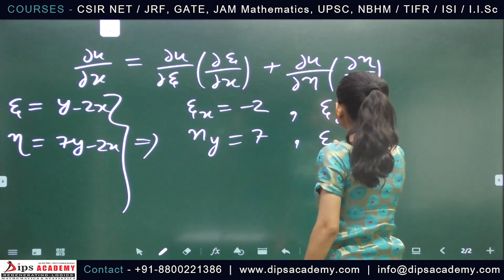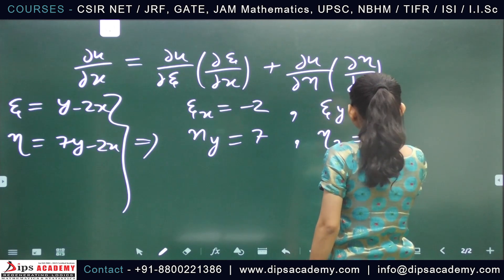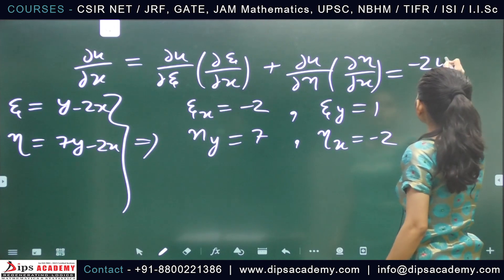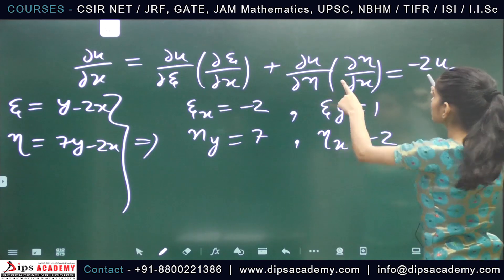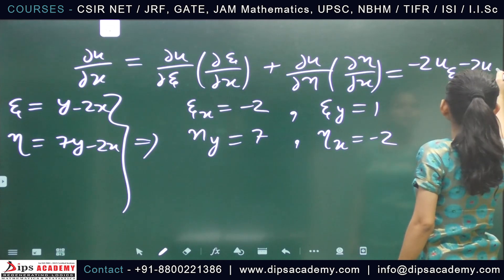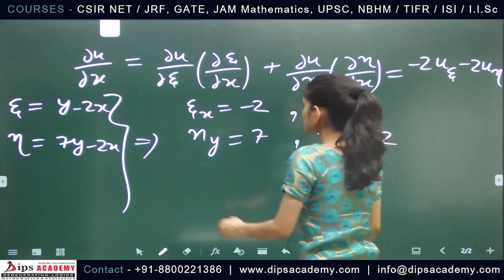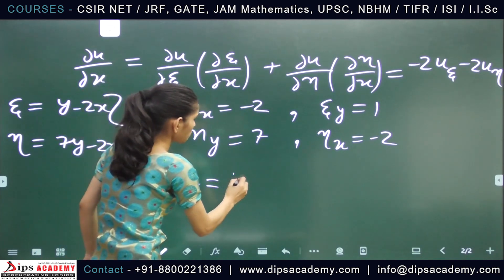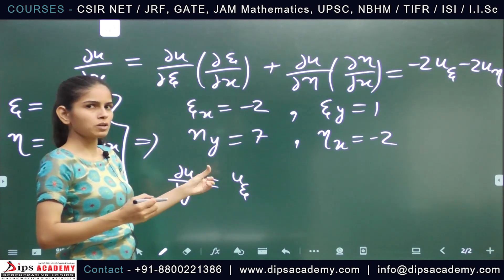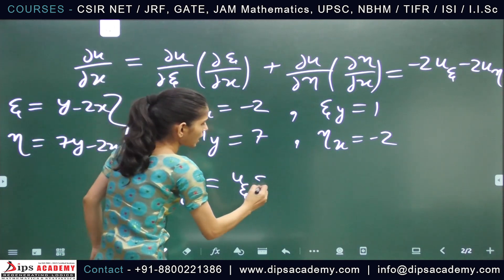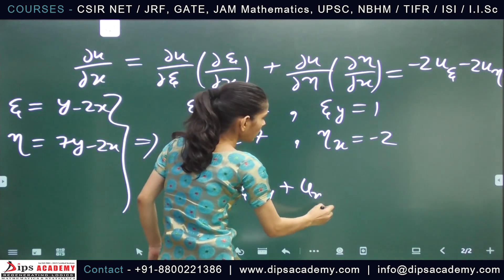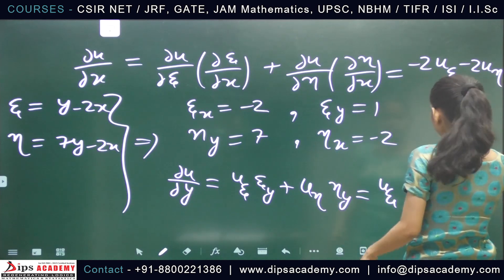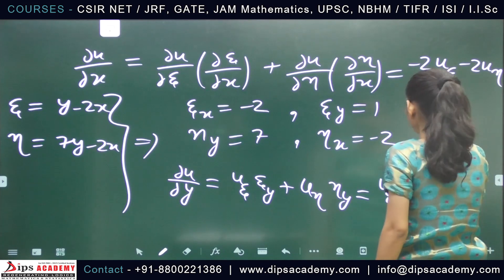Using the chain rule, del u/del x = u_ξ · ξ_x + u_η · η_x = -2u_ξ - 2u_η. Similarly, del u/del y = u_ξ · ξ_y + u_η · η_y = u_ξ · 1 + u_η · 7 = u_ξ + 7u_η.